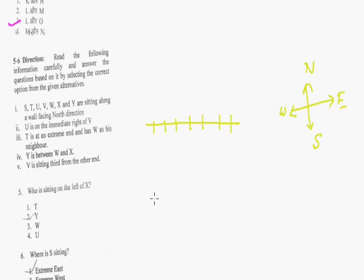Now let's come to directions. U is on the immediate right of V. So here somewhere is U, and it is to the immediate right of V, so here will be V. So here somewhere V and U is to the immediate right of it. Now T is at an extreme end and has W as his neighbour. So there are two possibilities: either T is here and W is his neighbour, or T is here and W is his neighbour. The next one says Y is between W and X. So if we go according to this possibility, Y will be here and Y is between W and X. So W here, Y in between them and X out here. Similarly, if we consider this case, then Y will be out here and X here.